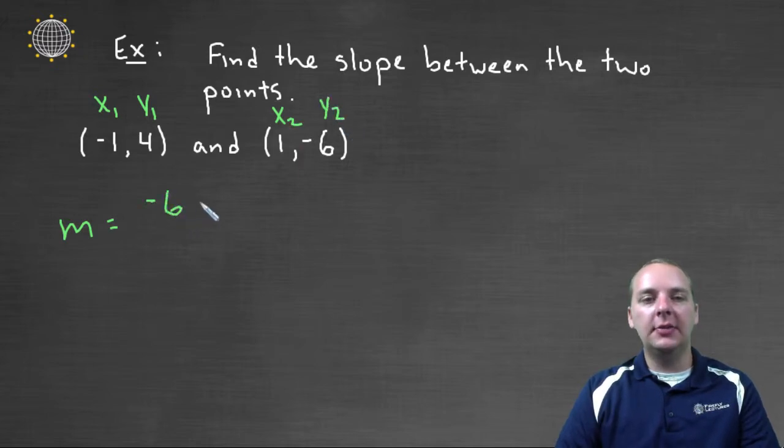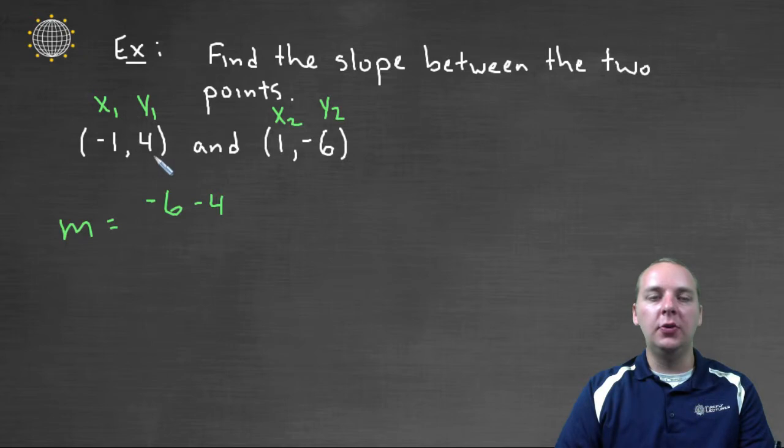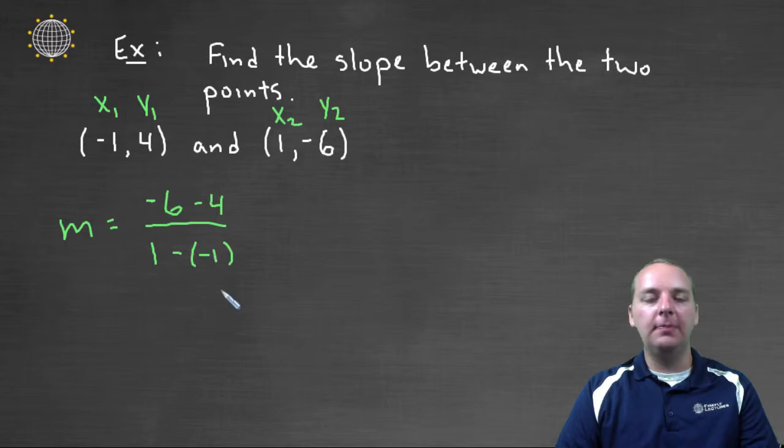We'd have negative six minus four, that's y-two minus y-one, divided by x-two minus x-one. Okay, this'll give us negative ten over positive two. Again minus a negative makes a positive, one plus one makes two. So this would give us a slope of negative five.